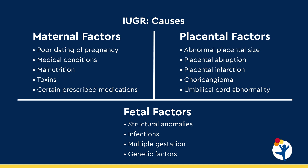Placental factors include abnormal placental size, placental abruption — which is early separation of the placenta with bleeding — placental infarction, which refers to cessation of blood flow to an area of the placenta, chorioangioma, which is a tumor of the placenta, and abnormal umbilical cord insertions such as membranous cord insertions.